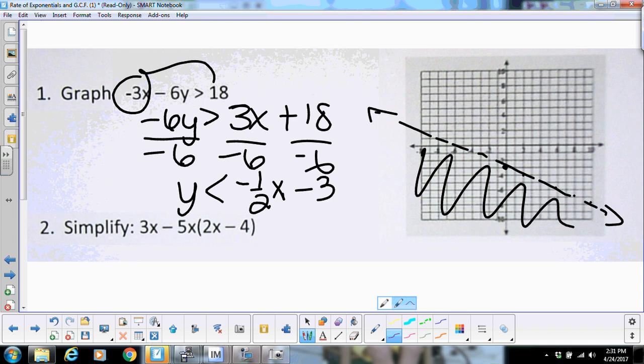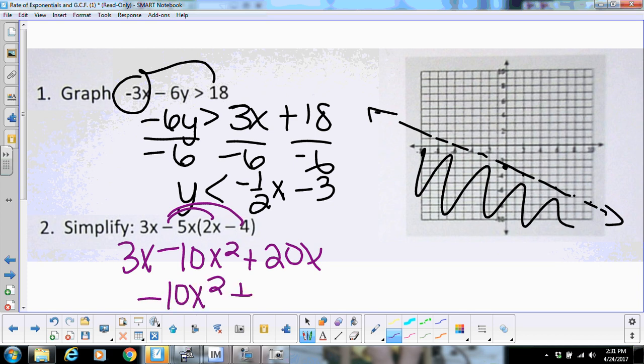Alright, number 2, you're simply going to distribute here. That's going to give me negative 10x squared and positive 20x. And then I've got the 3x in front. So when I combine like terms, that's going to give me negative 10x squared plus 23x.